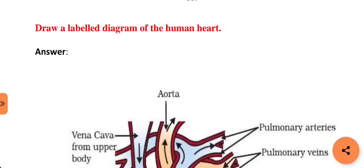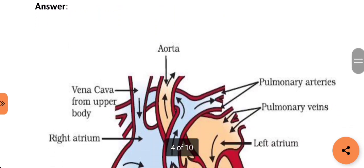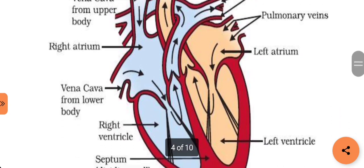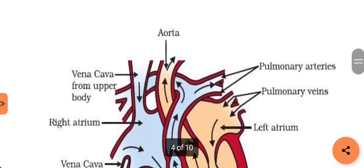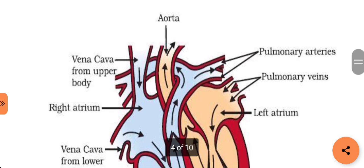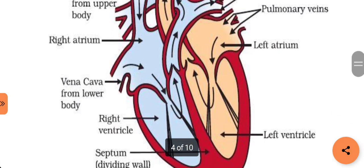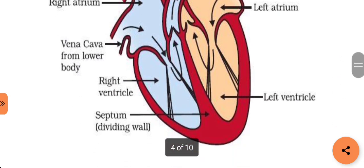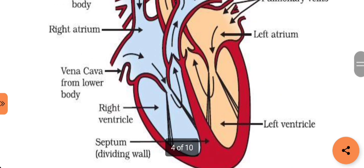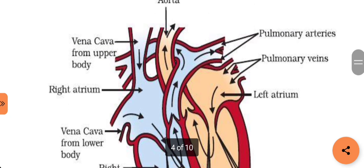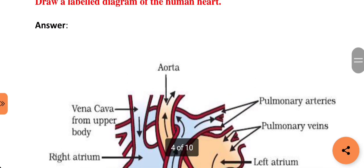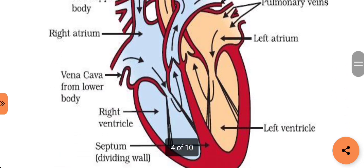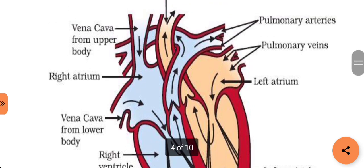Our next question is: draw a labelled diagram of human heart. Different parts of the heart are: aorta, pulmonary arteries, pulmonary vein, left atrium, left ventricle, septum (dividing wall), right ventricle, vena cava from lower body, right atrium, and vena cava from upper body. You have to draw this diagram of the human heart and properly label it.